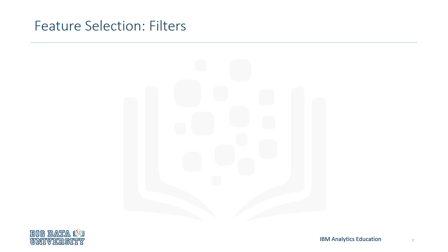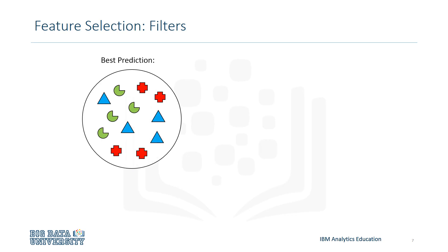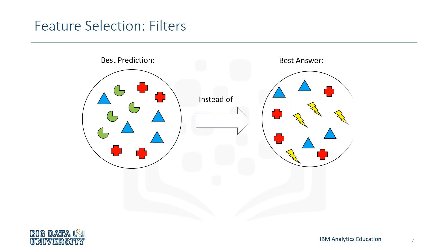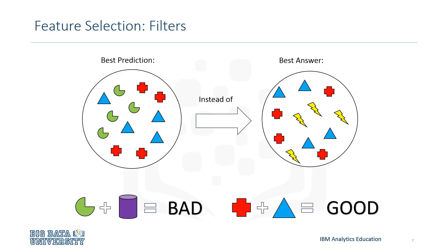Filters use a proxy measure which is less computationally intensive, but slightly less accurate, so it might have a good prediction but still may not be the best. Filters do capture the practicality of the data set, but in comparison to error measurement, the feature set selected will be more general than if a wrapper was used. An interesting fact about filters is that they produce a feature set that doesn't contain assumptions based on the predictive model, making it a useful tool for exposing relationships between features, such as which variables are bad together and drop accuracy, or good together and raise accuracy.